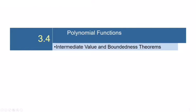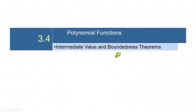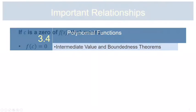Hi everybody. Today we're going to look at section 3.4. We're not going to do the whole section — we're just going to look at a couple of concepts. We're going to talk about the Intermediate Value Theorem and the Boundedness Theorem. So here we go.